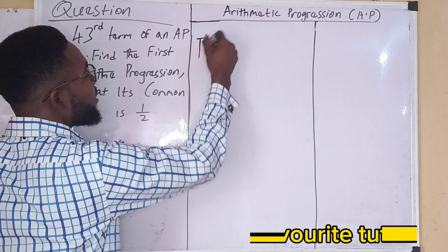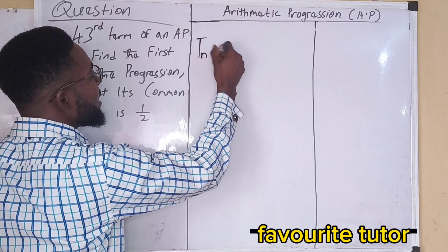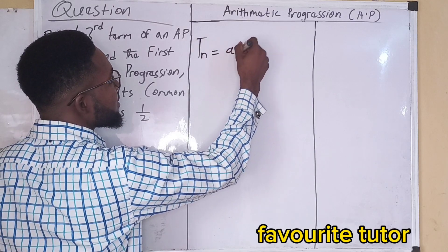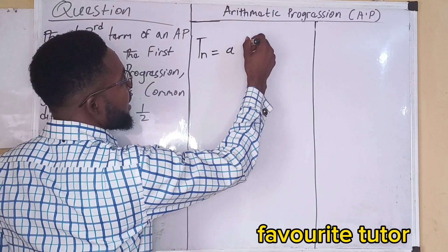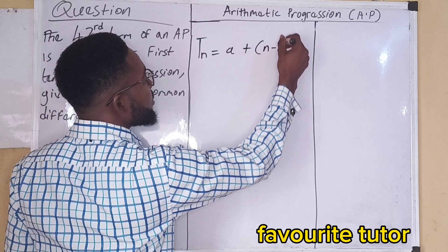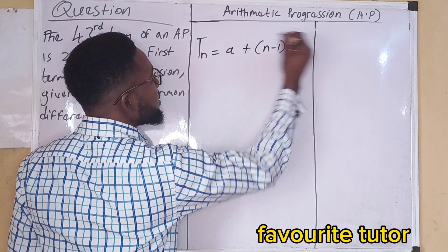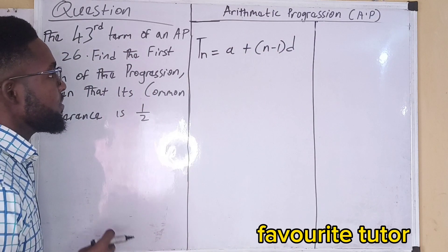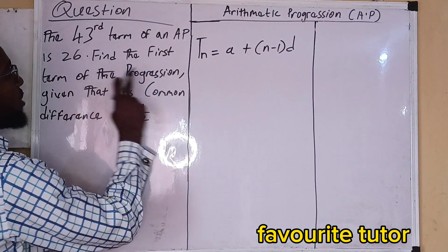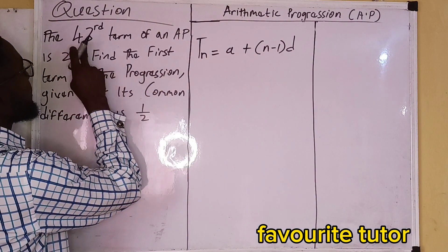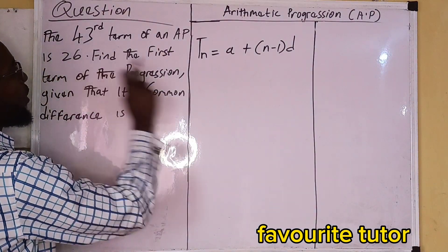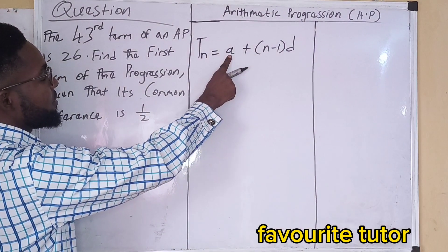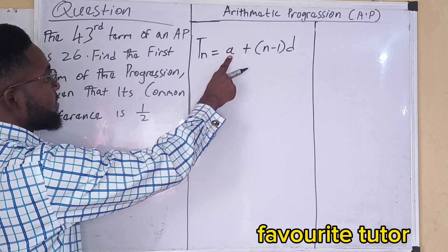The formula for the nth term of an AP is given as A plus N minus 1, times D. And we are looking for A, which is the first term.